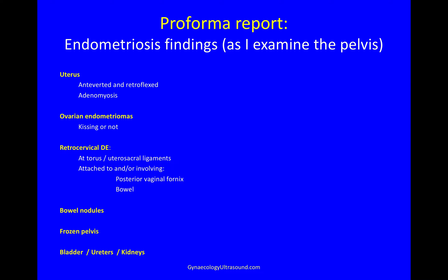As I examine the pelvis, I build up this report in my head looking for features of endometriosis: is the uterus antiverted and retroflexed, adenomyosis, ovarian endometriomas, kissing or not, retrocervical deep endometriosis at the torus and utero-sacral ligaments, attached to and or involving the posterior vaginal fornix and bowel, any other bowel nodules, frozen pelvis and bladder, lower ureters and kidneys.